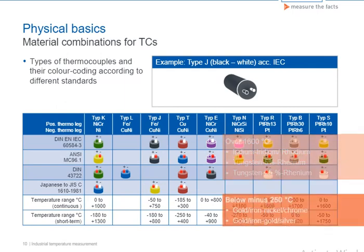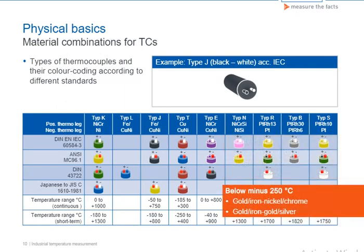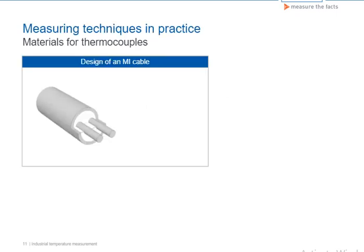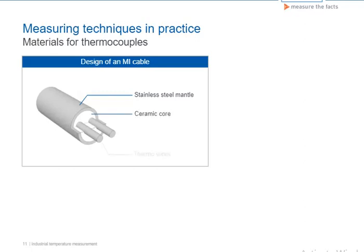Thermo-legs of gold, iron-nickel, chrome, gold-iron-gold, or silver are used to measure very low temperatures of under minus 250 degrees Celsius. Nowadays, thermocouples are made almost exclusively of mineral-insulated cables, also called MI cables or mantle cables. These are multi-core cables with a sheath of stainless steel in which a ceramic core with the various thermo-wires is embedded.